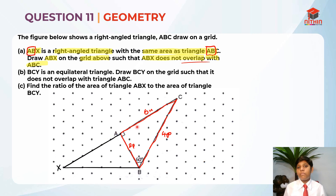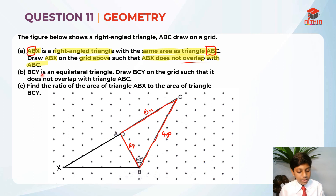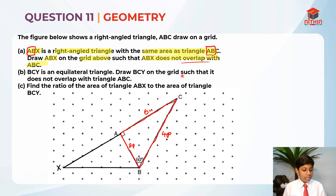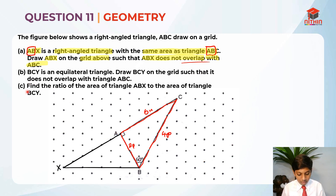Now let's move on to part B. BCY is an equilateral triangle. Draw BCY on the grid such that it does not overlap with triangle ABC.